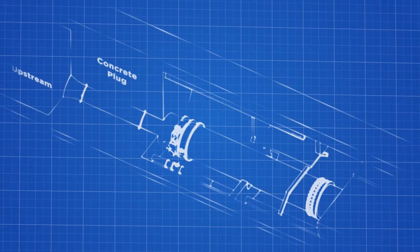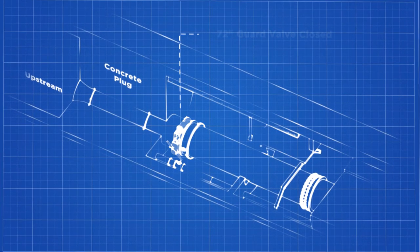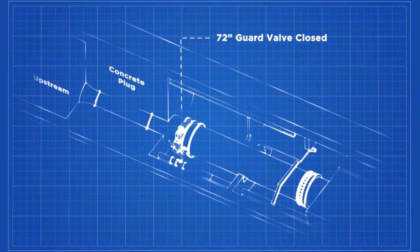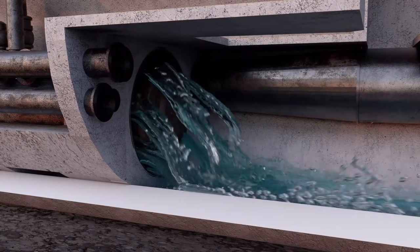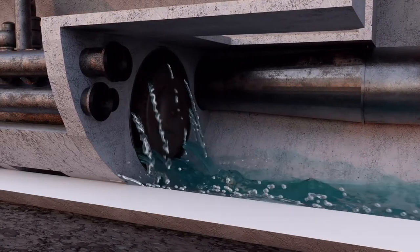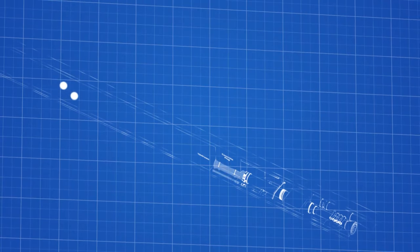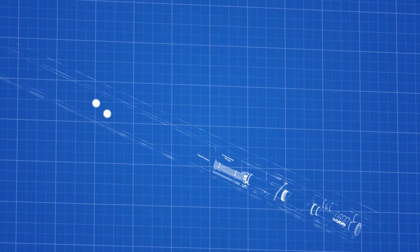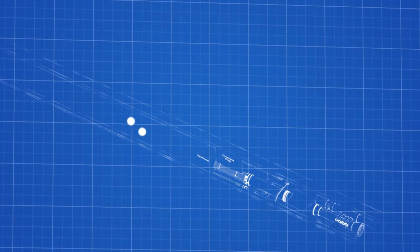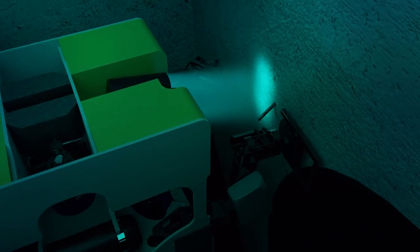At this point in the project, the large 72-inch guard valve was closed, reducing the flow through the low-level outlet to the minimum leakage rate past the valves. The Mohican entered the tunnel and traveled up to the upstream face of the concrete plug. Here, the Mohican used a different saw to trim the rebar protruding from the face of the concrete plug.